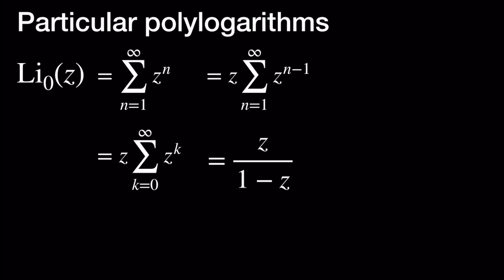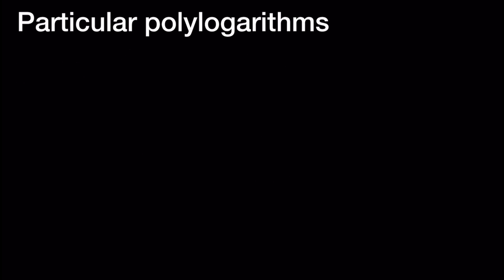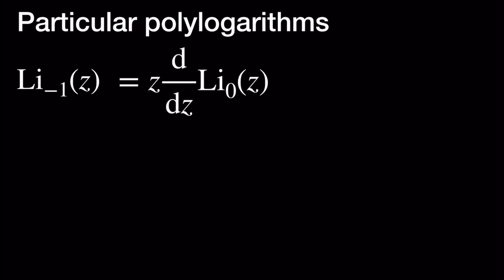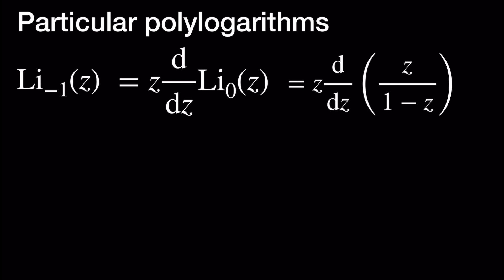The closed form Z divided by 1 minus Z is defined everywhere on the complex plane except at Z equal to 1. So we can basically extend our polylogarithm of order 0 on the complex plane without the point Z equal to 1. Next, the polylogarithm of order negative 1 can be defined as Z times the derivative of Li sub 0 evaluated at Z. Since Li sub 0 at Z equals Z divided by 1 minus Z, after differentiating and multiplying by Z we get Z divided by 1 minus Z squared, which is also defined on the complex plane without the point Z equal to 1.